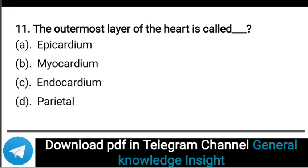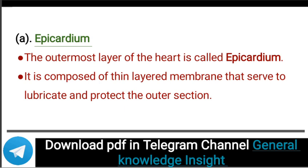Next question: The outermost layer of the heart is called what? The correct answer is option A, that is Epicardium. The outermost layer of the heart is called the Epicardium. It is composed of a thin layer membrane that serves to lubricate and protect the outer section.